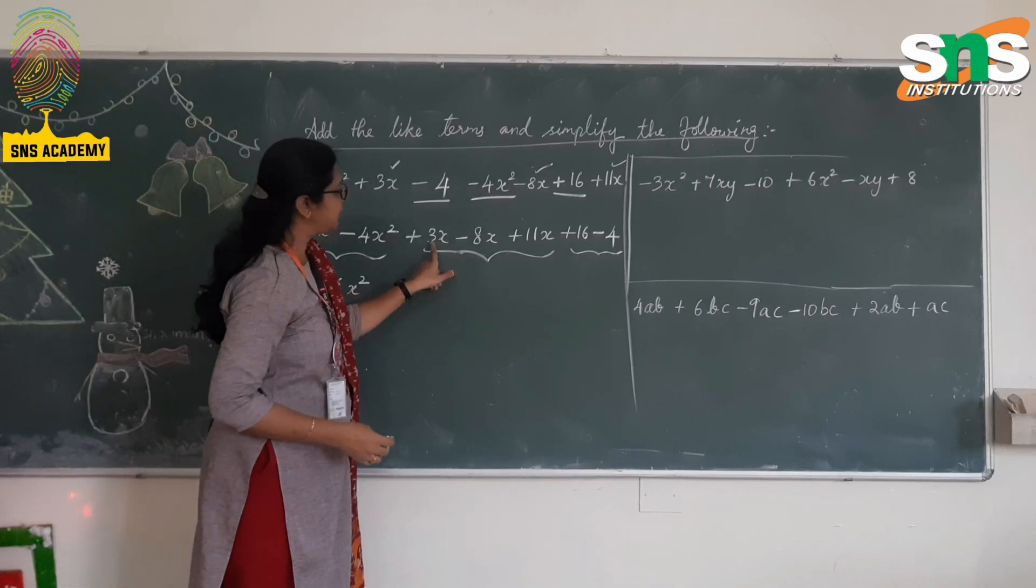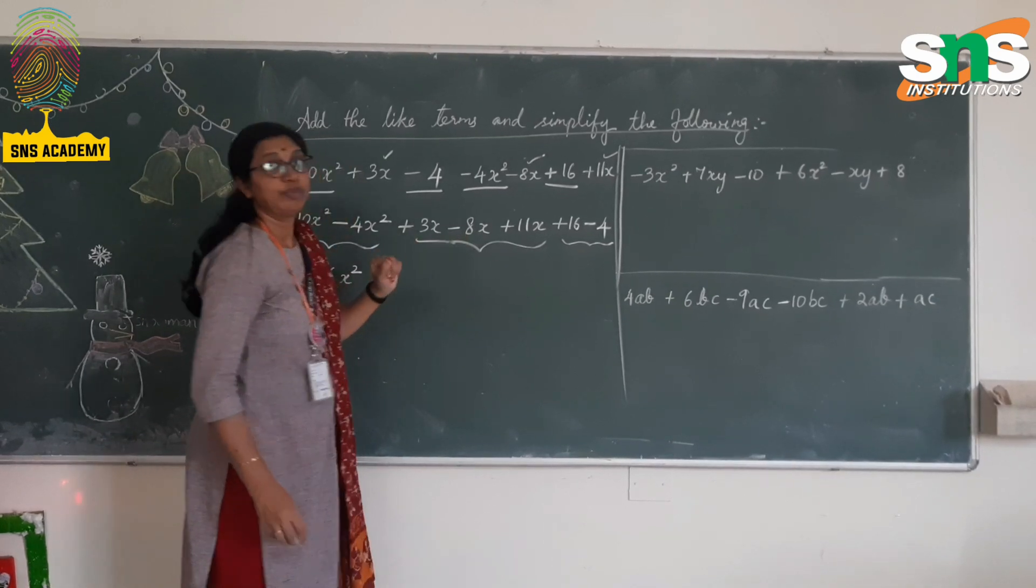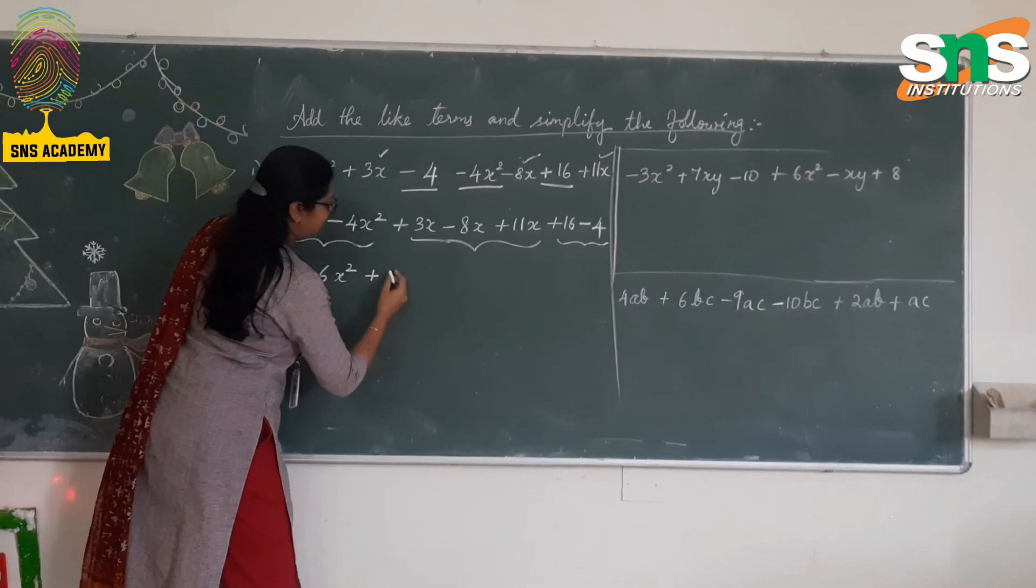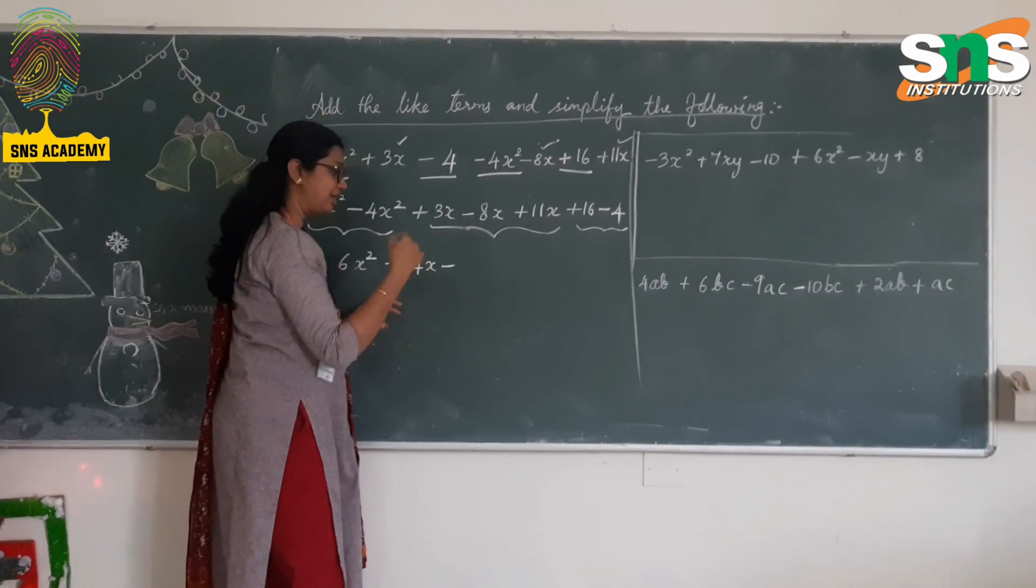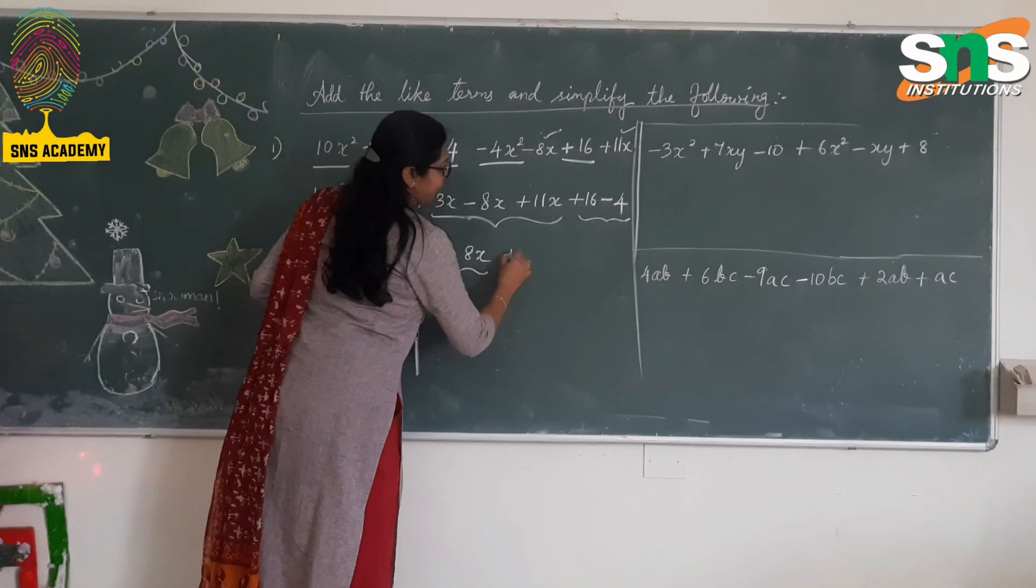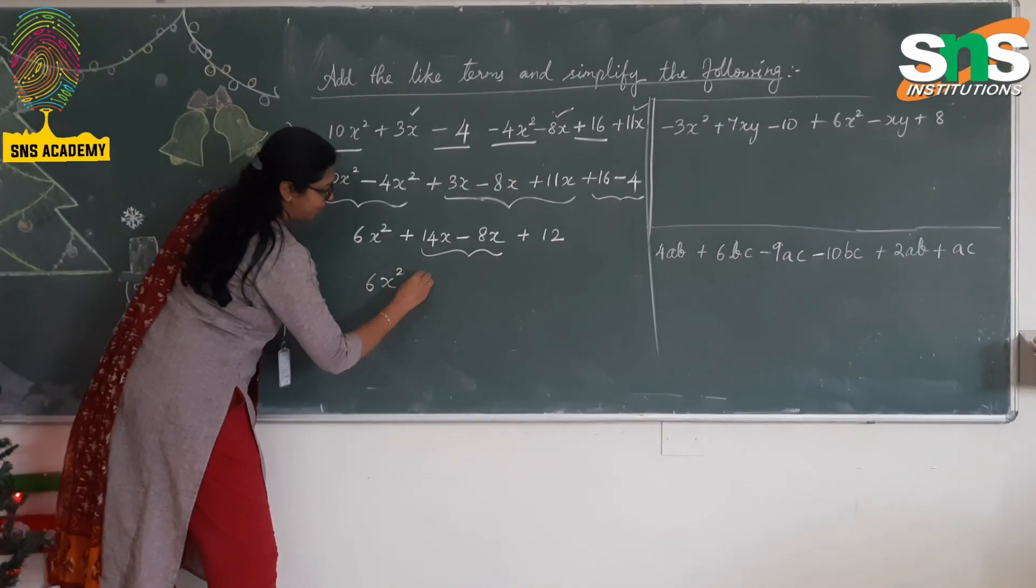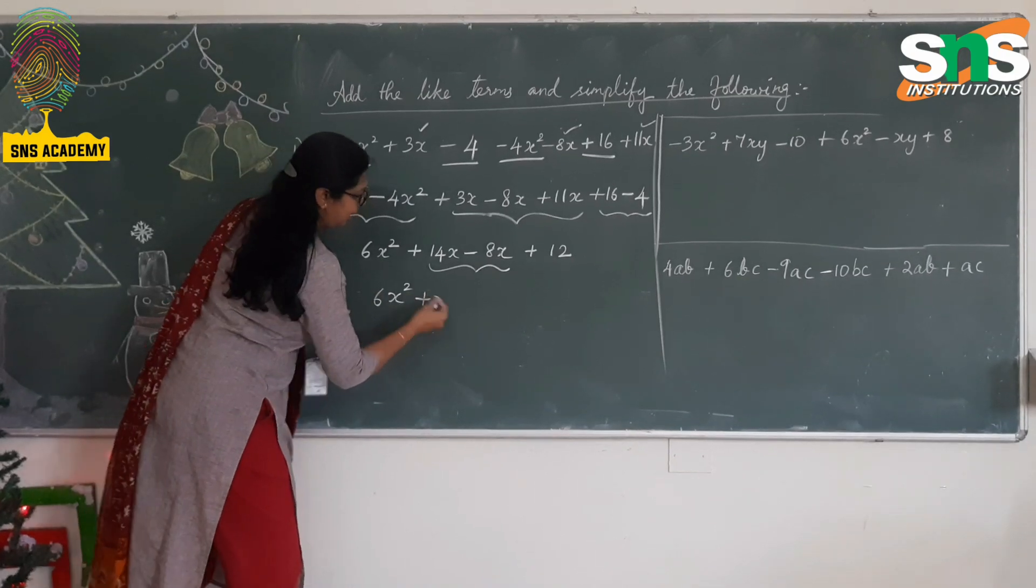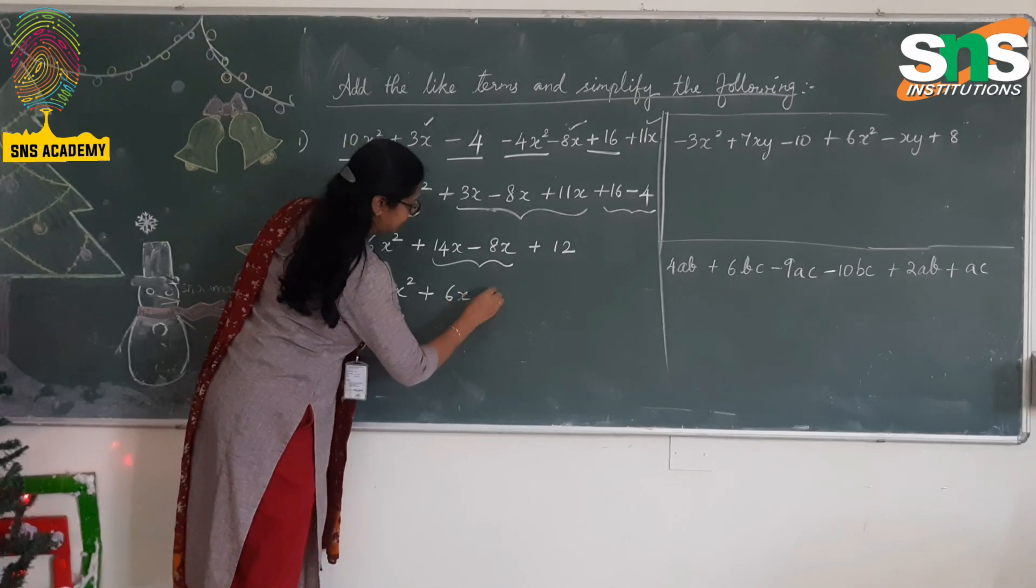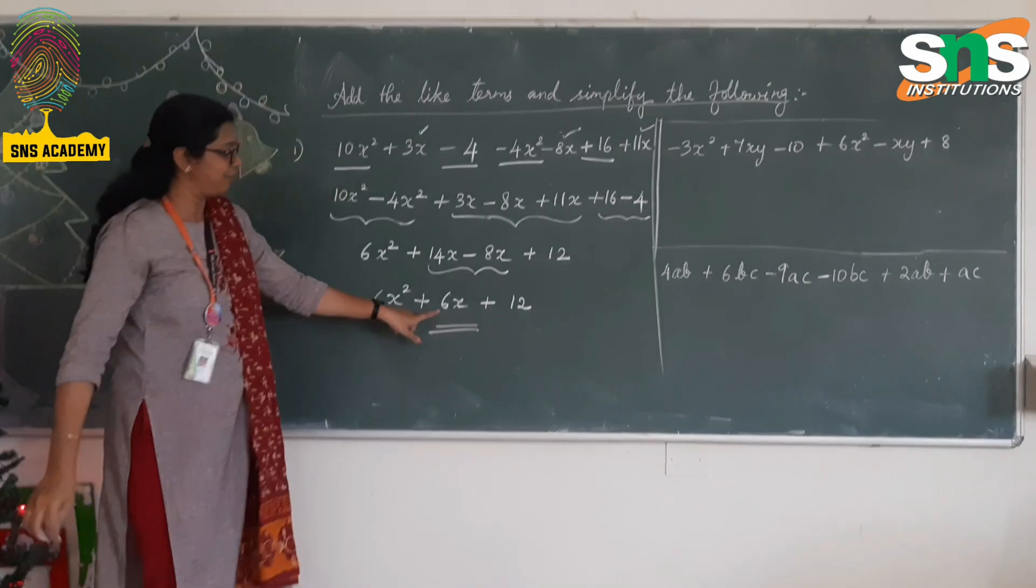Then comes positive 3x positive 11x which is 14x, 14x - 8x. We can write it and we can solve in the next step. 14x - 8x. Plus 6 - 4 is 12. So the final step, 14 - 8 is going to be 6x. 6x + 12. The final answer is 6x² + 6x + 12.